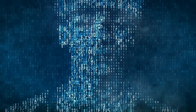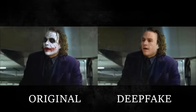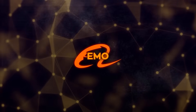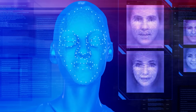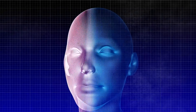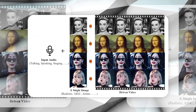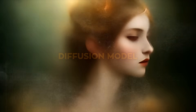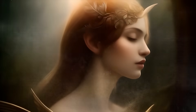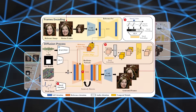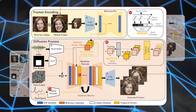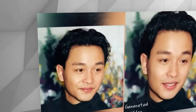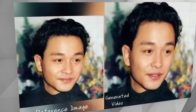Traditional ways of doing this often miss the mark, not quite capturing how unique everyone's face moves. Emo does something pretty smart to avoid these pitfalls. Instead of relying on complicated steps like making a 3D model of the face or trying to map out all the facial features exactly, it jumps straight from the sound to making the video. It uses something called a diffusion model, which is an AI method that's great at making images look lifelike and natural. This model listens to the audio and then figures out all the tiny movements your face would make to produce those sounds, and the results are amazing.